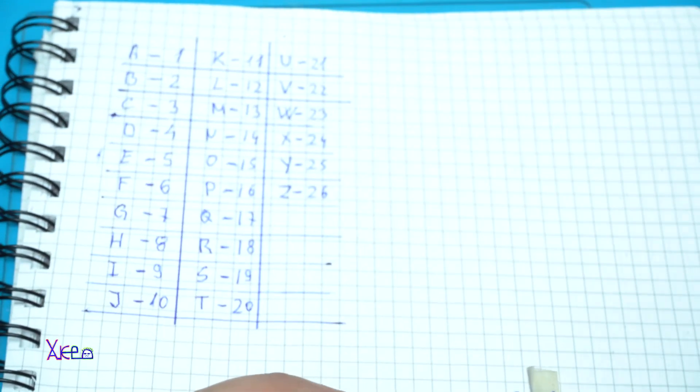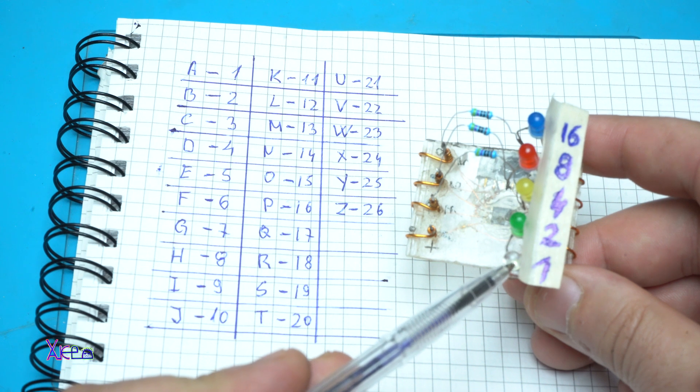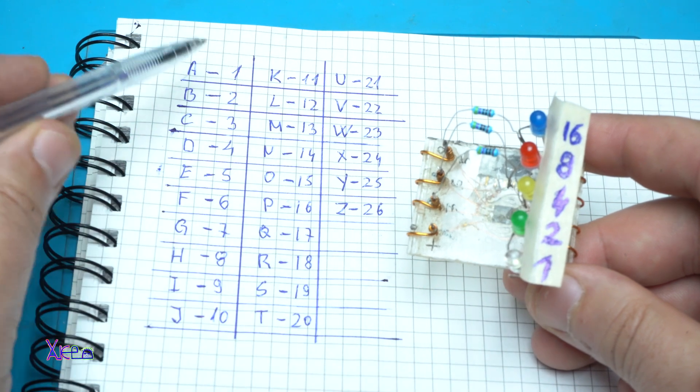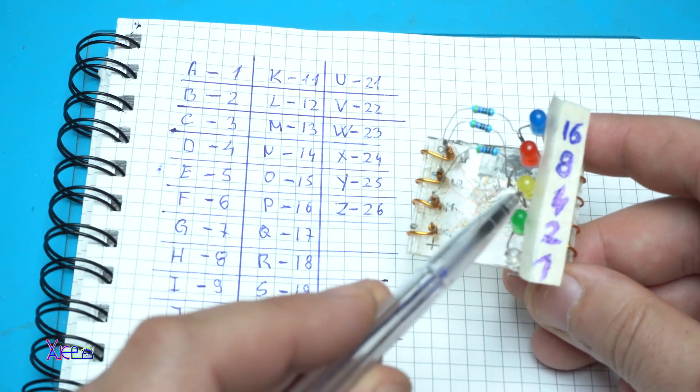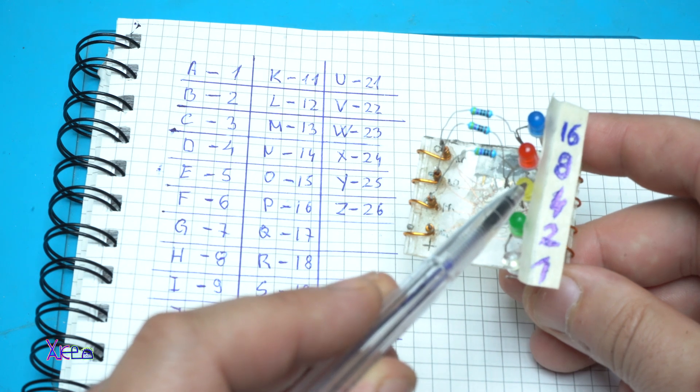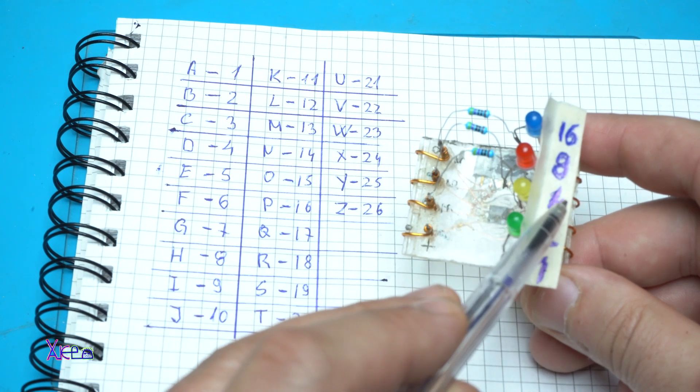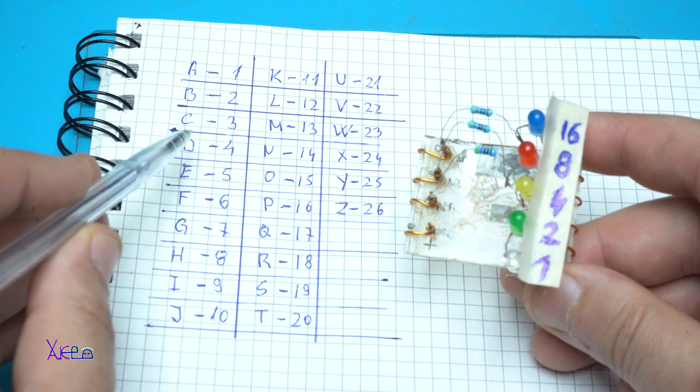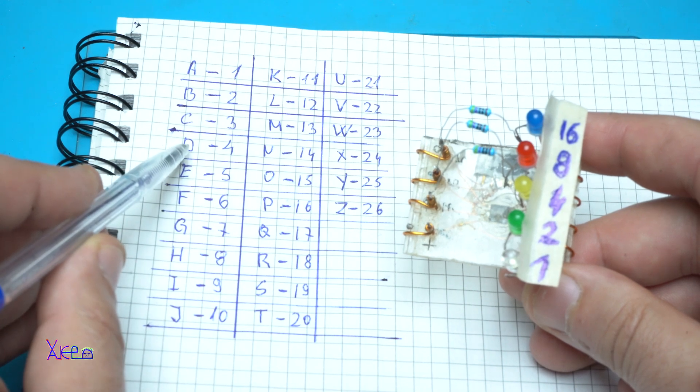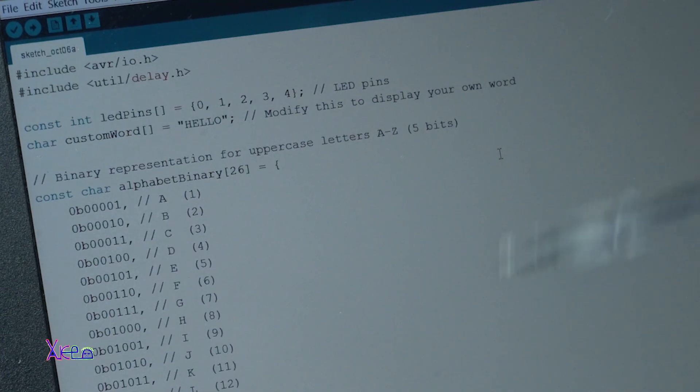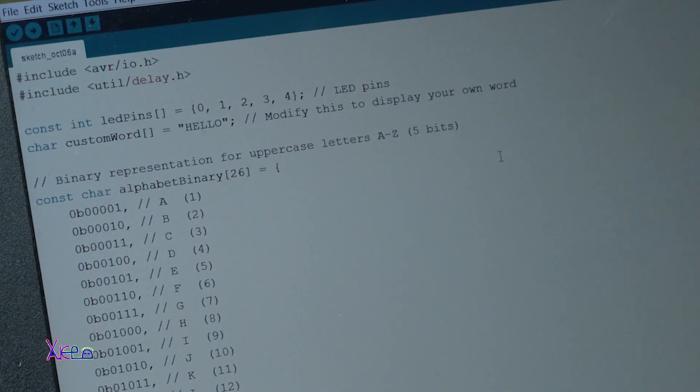For example, if the first LED blinks, that means one, and one is A. If the yellow LED blinks, that means four, and four is letter D. In the description below I will put the code so you can download it and try it.